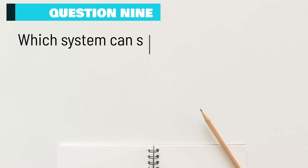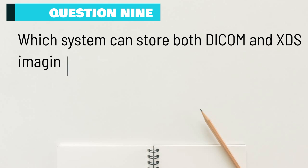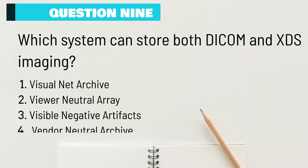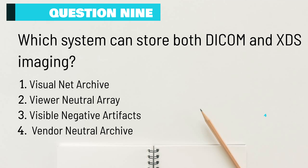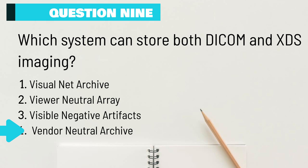Question 9: Which system can store both DICOM and XDS imaging? A. Visual Net Archive. B. Viewer Neutral Array. C. Visible Negative Artifacts. D. Vendor Neutral Archive. A Vendor Neutral Archive can store DICOM and XDS images.